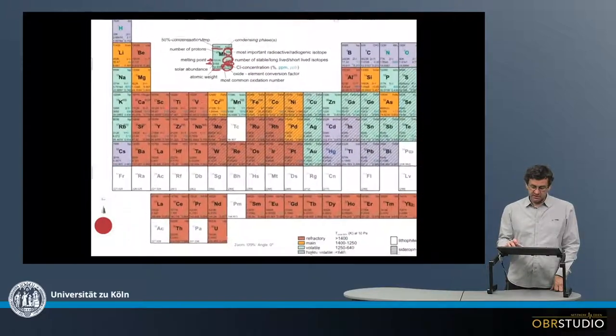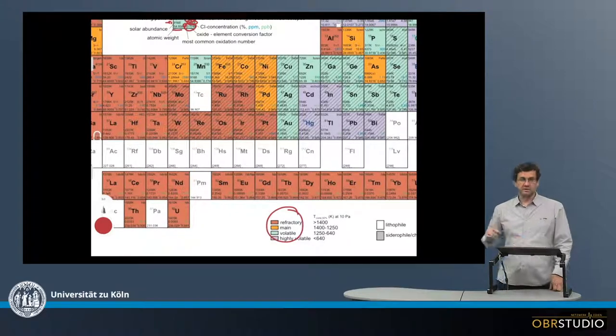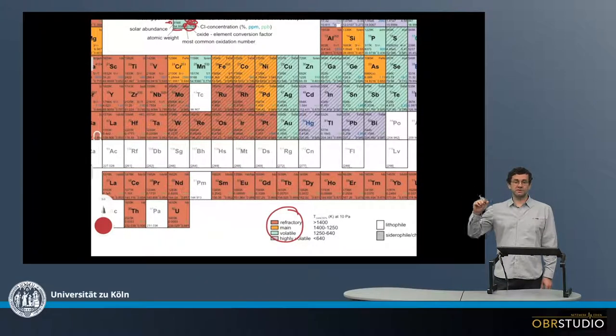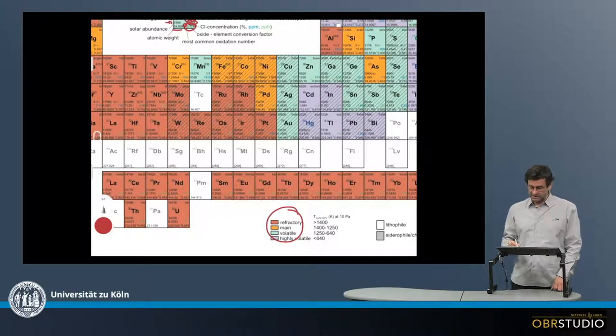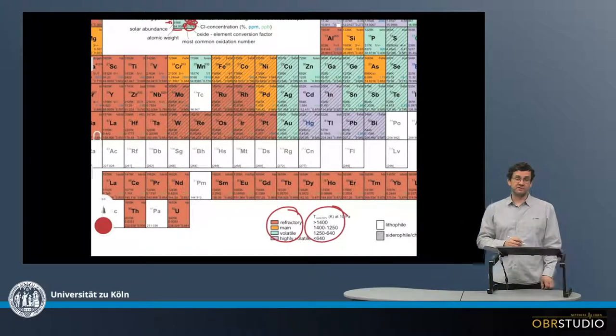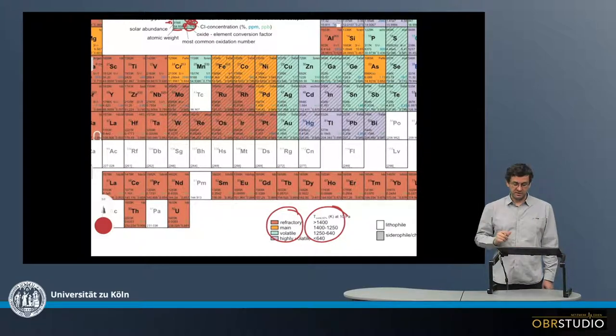And then there is the color scheme, which is resolved down here. So in reddish these are the refractory elements, in these yellowish, these are the main elements, and then the volatile and highly volatile elements. And here are the 50% condensation temperature ranges for these various cosmochemical characteristics here.